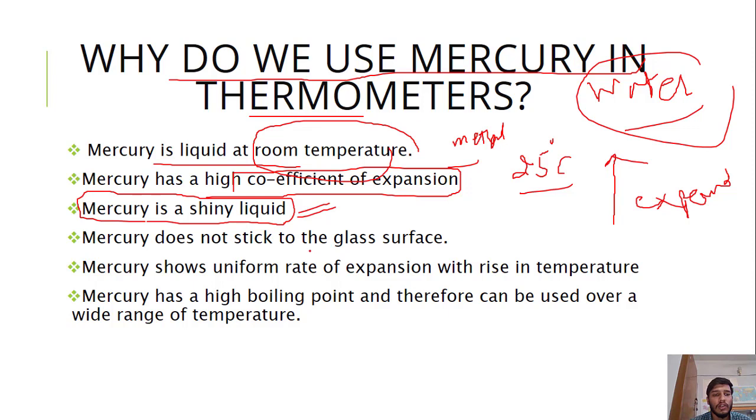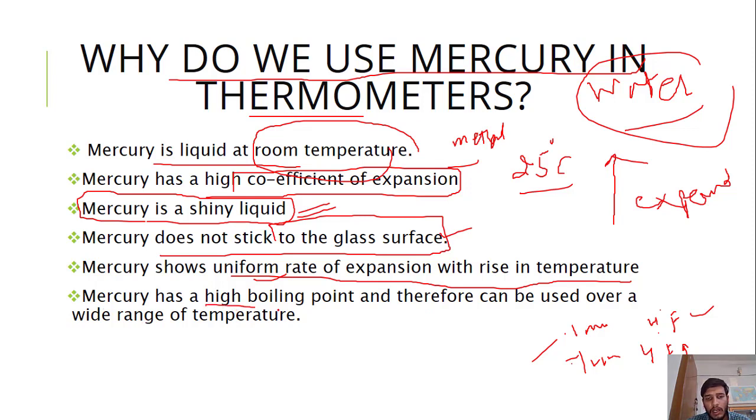It does not stick to the glass surface. It shows uniform rate of expansion with rising temperature. Suppose 0.1 mm rise happens for 4 degree Fahrenheit, then every time 4 degree Fahrenheit increases, it will increase 0.1 mm only. Moreover, mercury has a high boiling point, therefore it can be used over a wide range of temperature. Water's boiling point is 100 degree Celsius. As soon as temperature goes up, it will change its phase from liquid to gas to vapors and you will not be able to record the temperature.